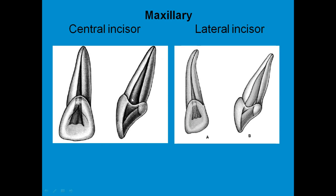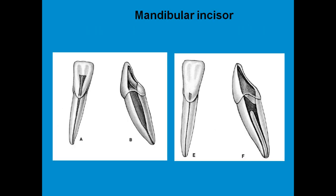We cut a cavity to gain access and then introduce our instruments. For the lateral incisor, the access cavity preparation is triangular in shape, similar to the shape of the pulp chamber. For the mandibular incisor, we also find a triangular pulp chamber, so the access preparation is similarly triangular. One variation to note is that the mandibular incisor can have two orifices and two root canals exiting as two apical foramina — type three of Weine's classification.